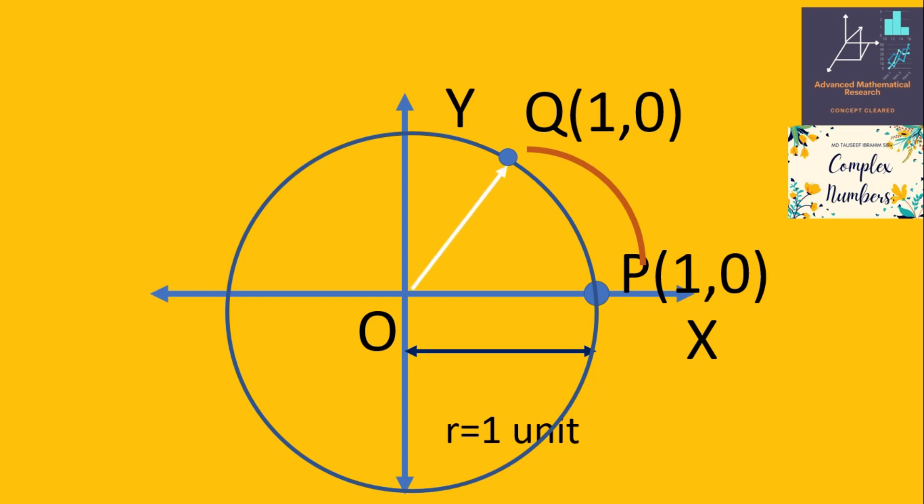Point Q is at (1, 0). Let's assume that point Q is making an angle theta with the x-axis, which is equivalent to rotating point P by an angle theta in the counter-clockwise direction.